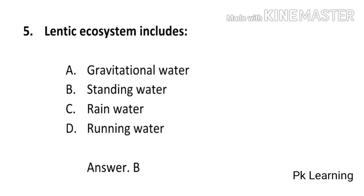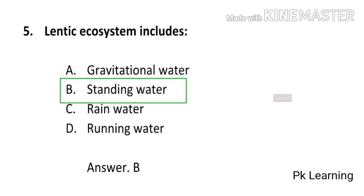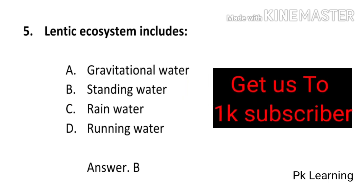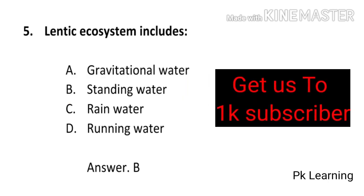Next question: Lentic ecosystem includes — (a) Gravitational water, (b) Standing water, (c) Rain water, (d) Running water. The answer is (b) Standing water. Lentic ecosystem refers to standing water; (b) is the correct option.